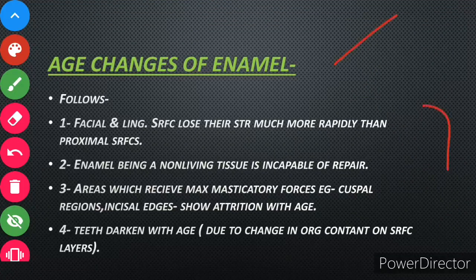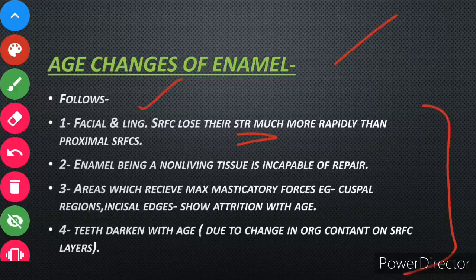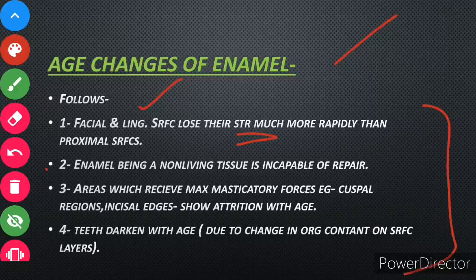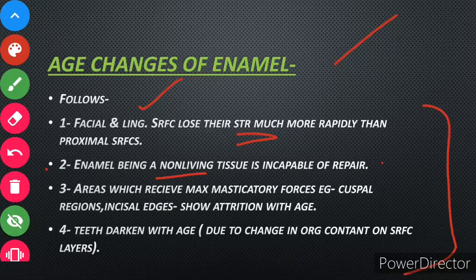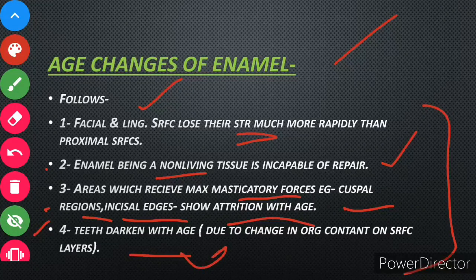Now, the age changes in enamel — four points. First, facial and lingual surfaces lose their structure much more rapidly than proximal surfaces. Second, enamel, being a non-living tissue, is incapable of repair — if it decays, it cannot repair itself. Third, areas which receive maximum masticatory forces, such as cusp regions and incisal edges, show more attrition with age. Fourth, teeth darken with age, which may occur due to changes in the organic content of the surface layer.